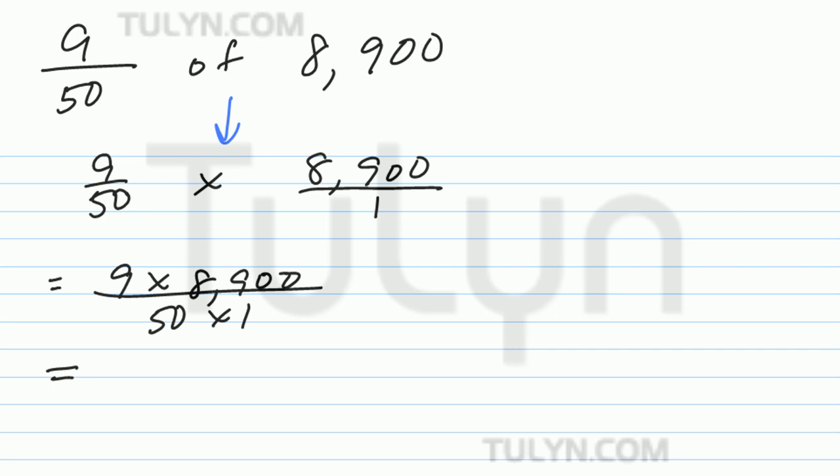All right, so go ahead and simplify. What goes into your numerator and your denominator, or what are common factors? Well, there's 10 for one. 10 goes into both, so 5. Divide by 10 on the bottom—50 divided by 10 is 5, 8,900 divided by 10 is 890.